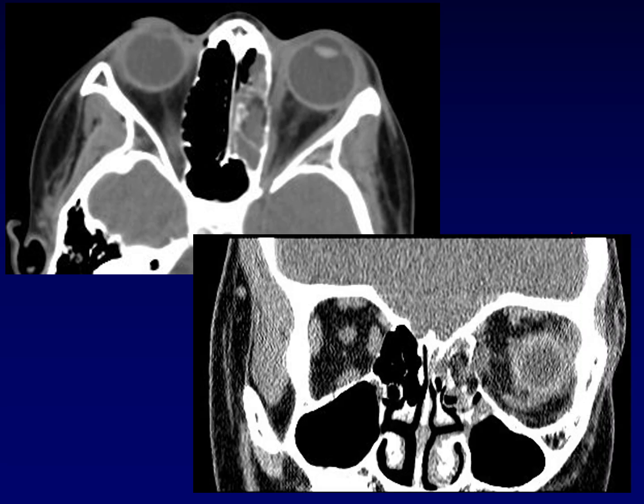Once we move to the coronal plane, it's easier to see the herniated orbital fat through the small defect, and in fact herniation of the medial rectus muscle, which turned out to be clinically entrapped in this patient.